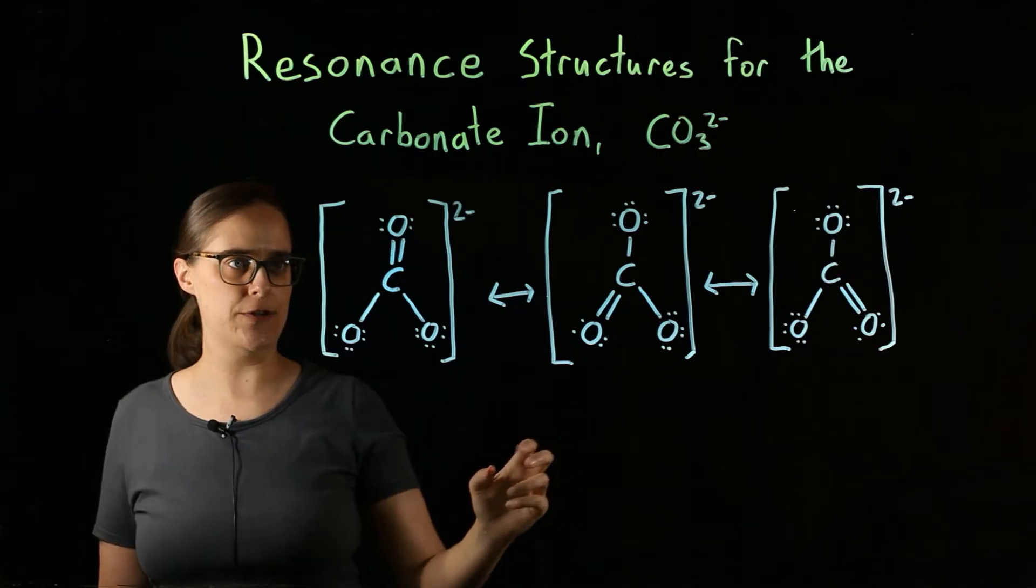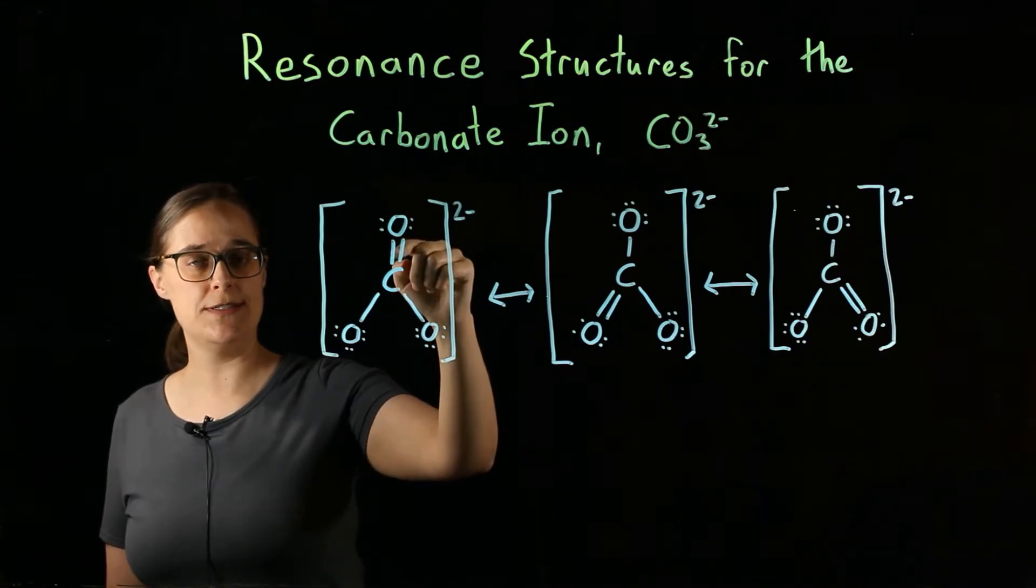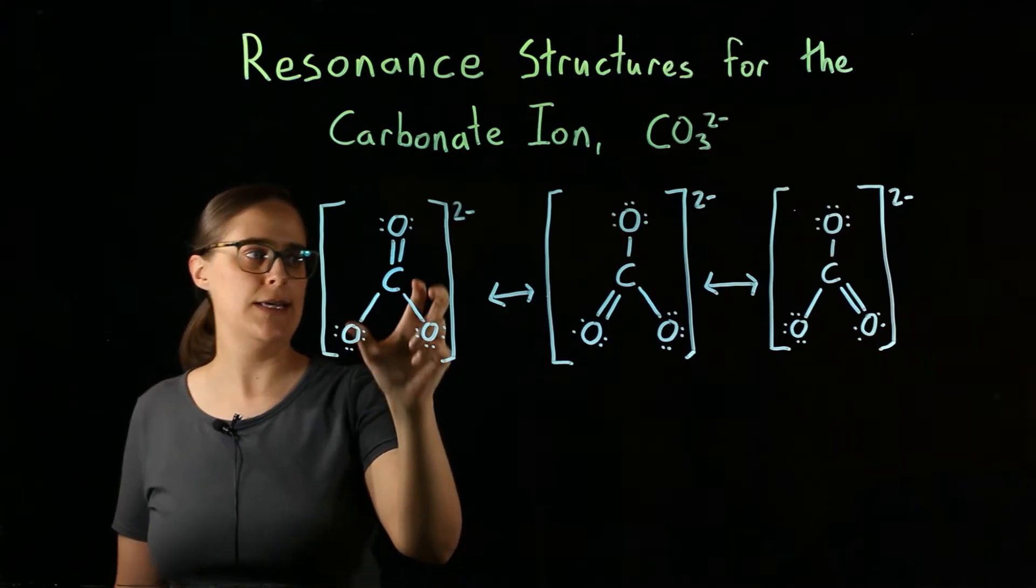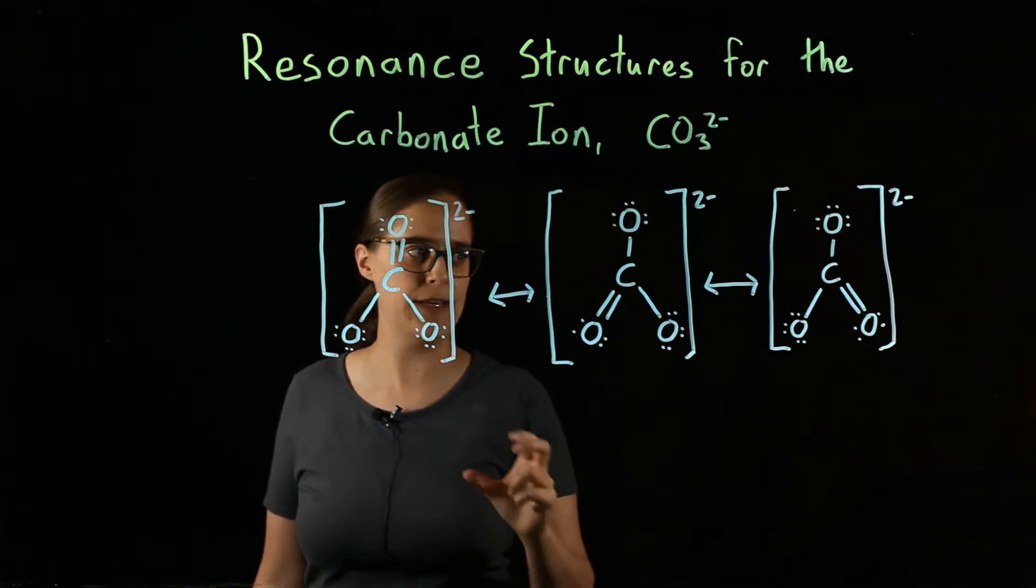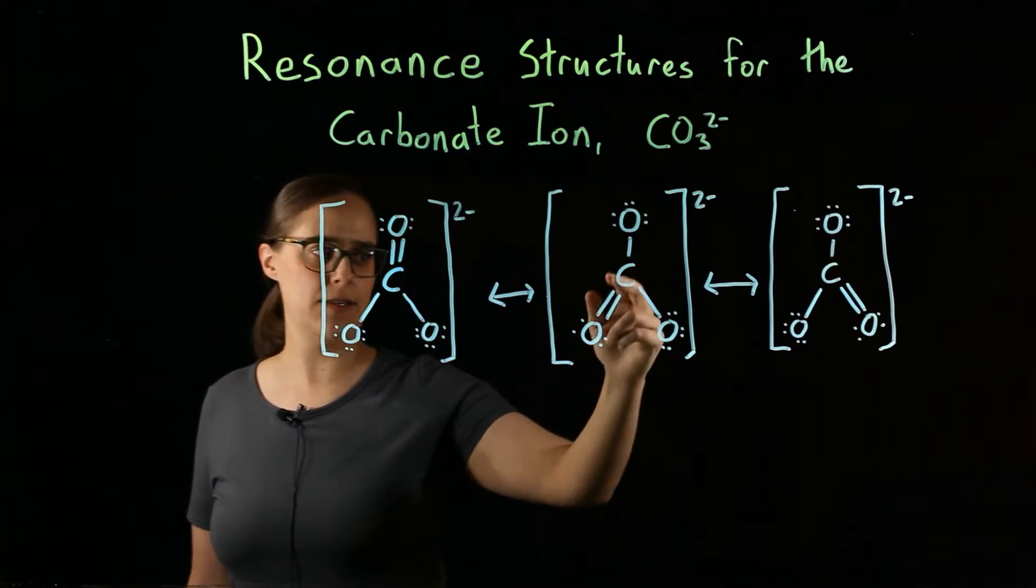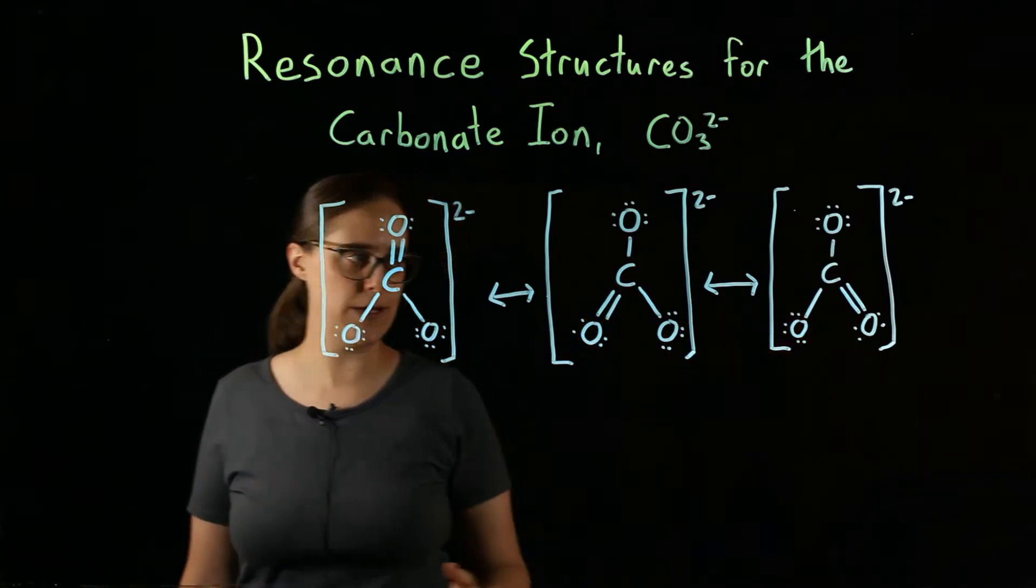In each structure, you see that one of the oxygens is double bonded to the carbon, and two are single bonded. These three structures have that double bonded oxygen in different locations—at the top, then at the bottom left, then at the bottom right.